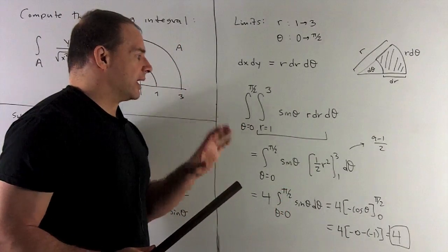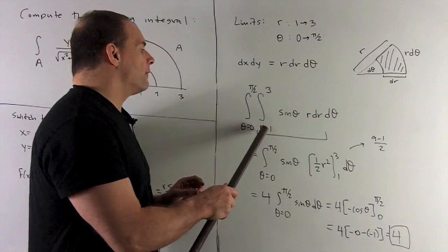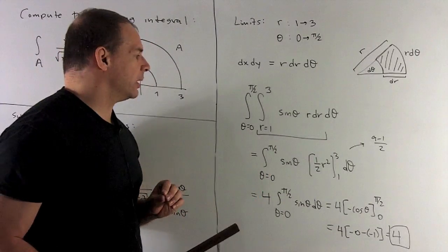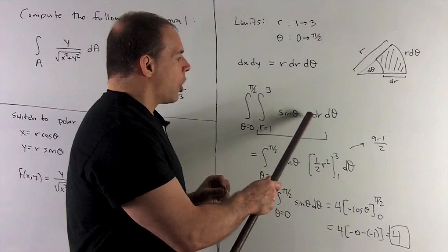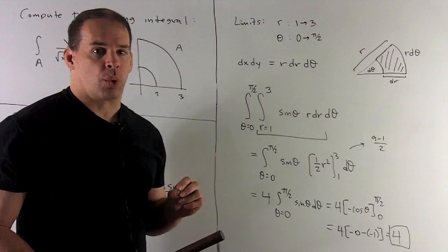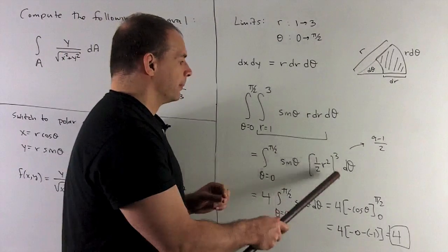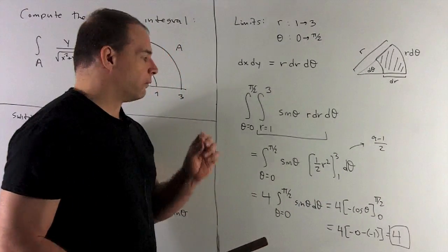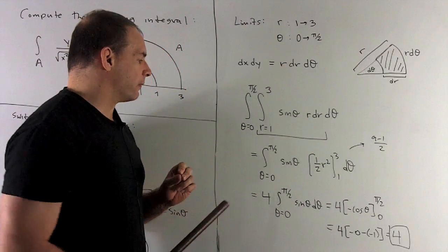Put everything in, and now I can calculate. We'll do r first, so sine theta just sits there, waiting for us to get to it. We're going to integrate r dr, so it's one half r squared, put our limits in, and then we take the difference, we're going to 9 minus 1 over 2, gives me a 4. Bring that out in front.